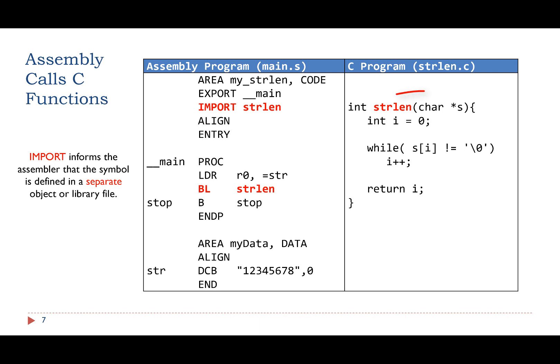For example, this C function only takes one argument, and the assembly program passes this string pointer in register R0 to the C function. The assembly code expects the C function to return the result in register R0.